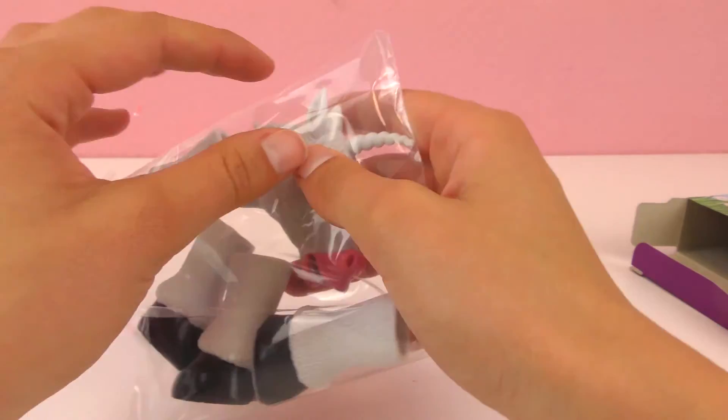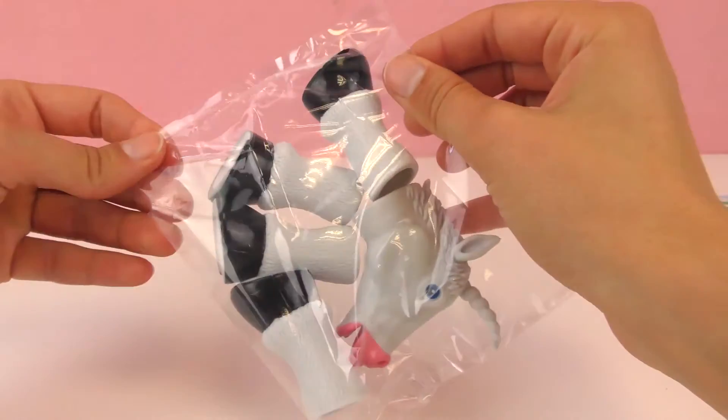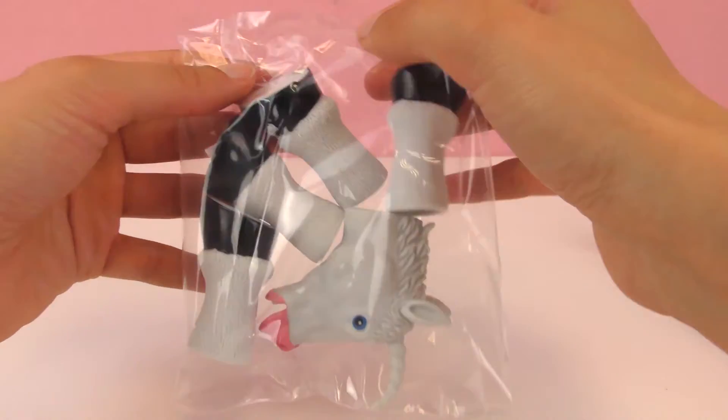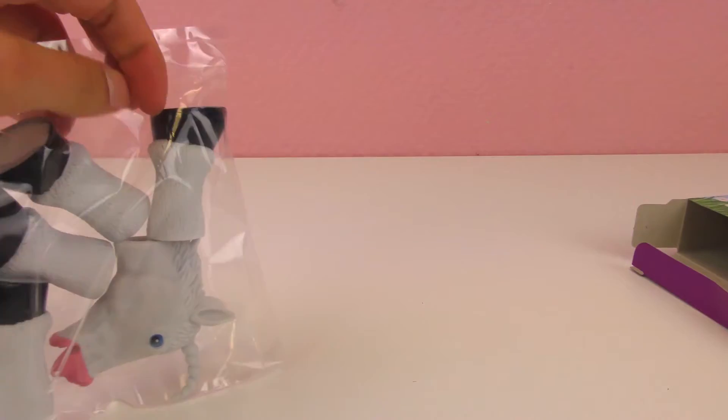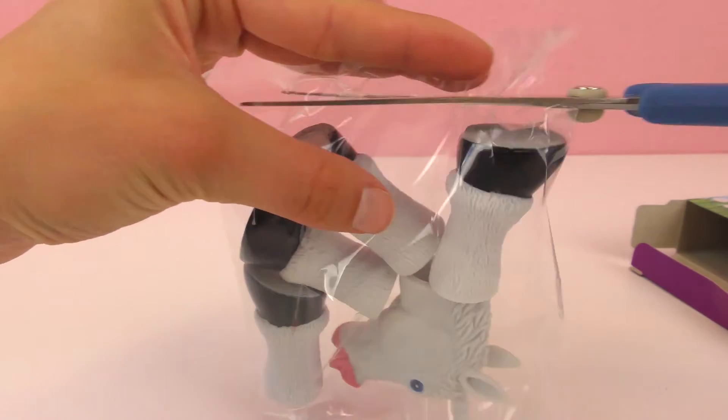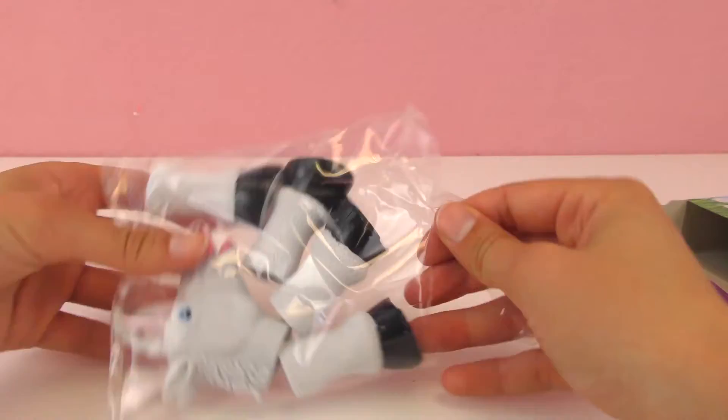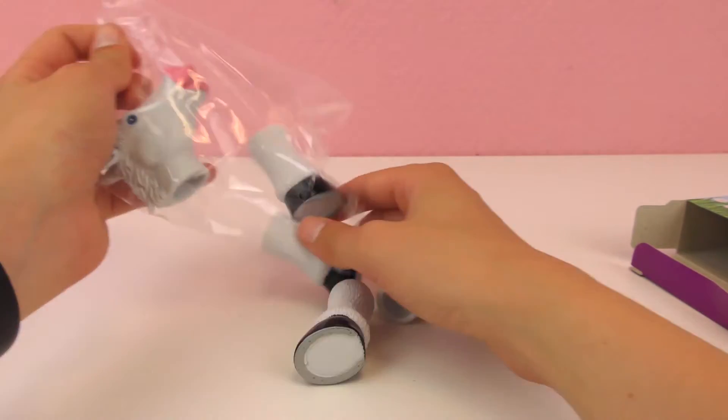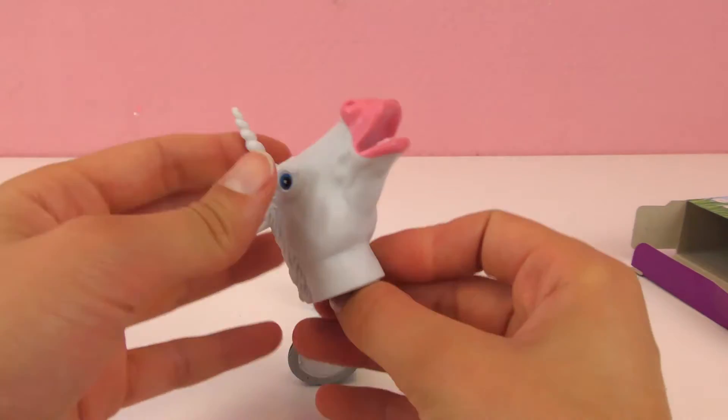There is one bag with the whole unicorn pieces. And let's see, I think we need a pair of scissors to open this. There we go. This is so fun. So here are the legs and here we have the head.